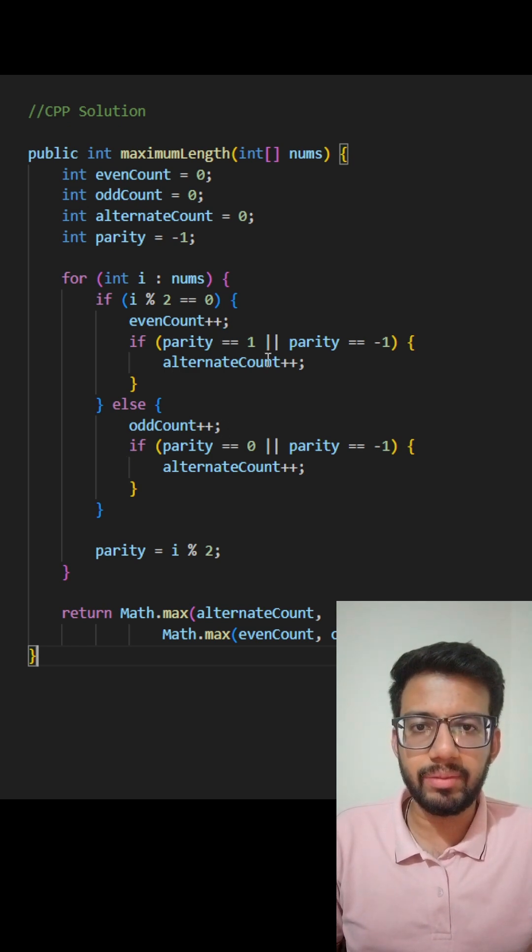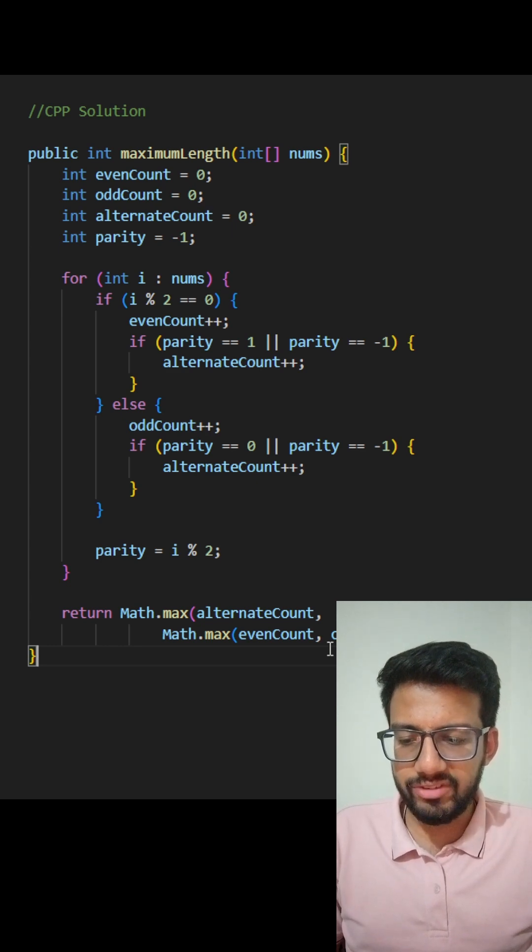In that case, I increase my alternate count, and at the end, I also update the parity with the parity of my current element. At the end of this loop, I return the maximum of all the three values, even count, odd count, and alternate count.